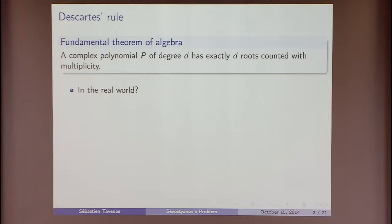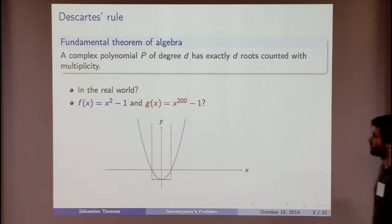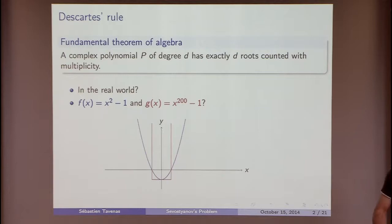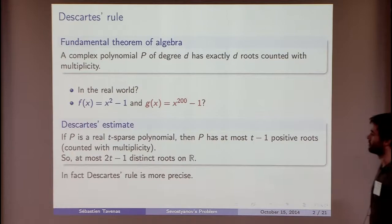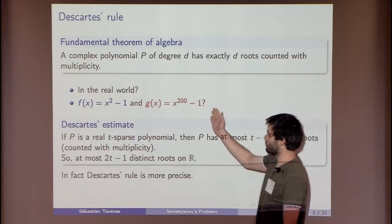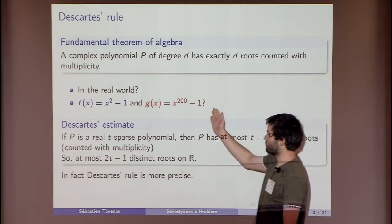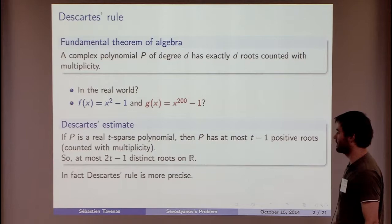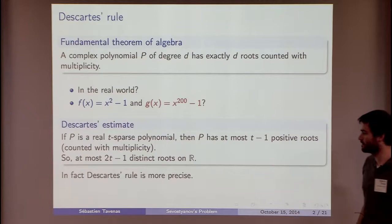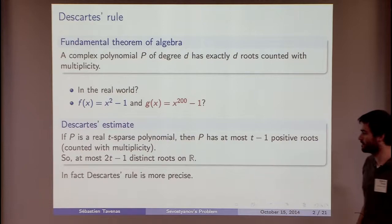That is the case for complex roots, but what happens for real roots? For example, we have a polynomial of degree d and one of degree 200, and the number of real roots is always 2. Descartes proved it: for real roots, we can consider the parameter which is the number of monomials, which we call the sparsity. Here the sparsity is 2 and 2.